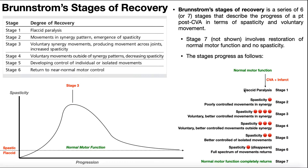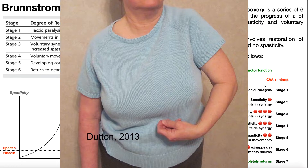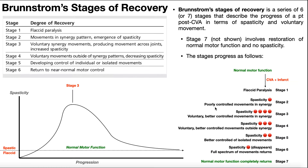Initially we start below normal motor function in that flaccid paralysis — that's stage one. Very quickly, we start to develop spasticity. Once spasticity begins to develop, that gets you to stage two, where we see the emergence of spasticity and poorly controlled movements within a given synergy pattern. The most common one you'll see in the upper extremity is a flexion synergy. Through stage two, spasticity increases up to stage three, where we see a peak in spasticity.